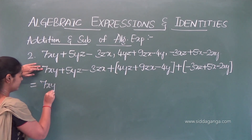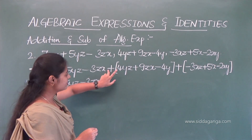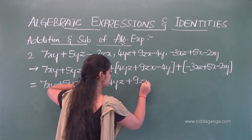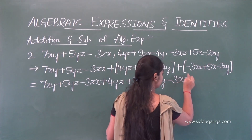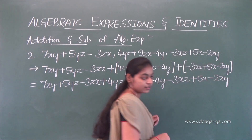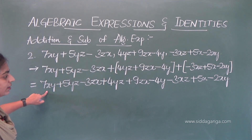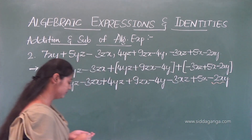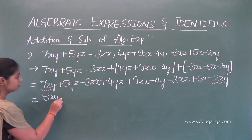Writing out the first expression: 7xy plus 5yz minus 3zx, then adding 4yz plus 9zx minus 4y, then adding minus 3xz plus 5x minus 2xy. Now identify like and unlike terms. For xy terms: 7xy and minus 2xy — that gives 5xy.